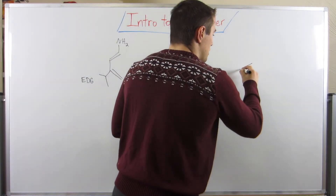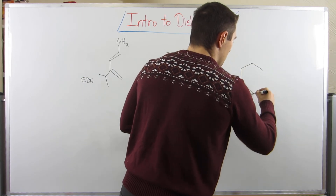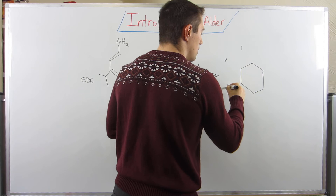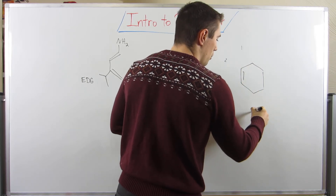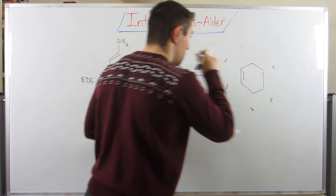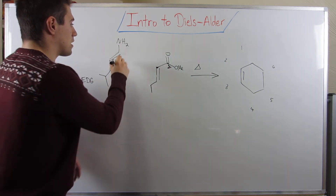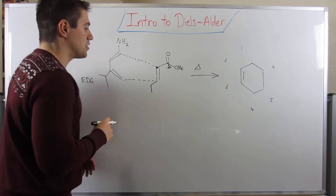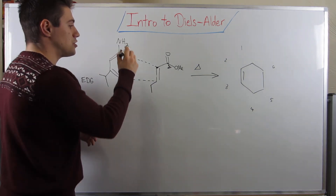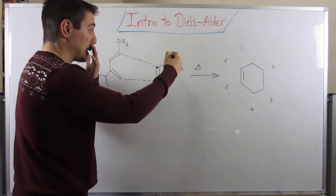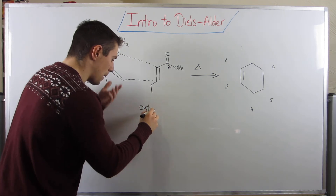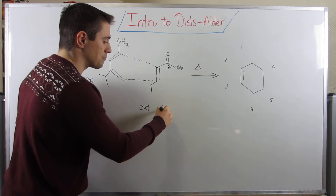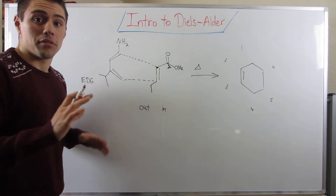We always make our six-membered ring with a double bond between positions two and three: one, two, three - double bond - four, five, and six. Let's make our little pocket. It's safe to say that the NH2 and the ester are out-groups. On the other hand, this ethyl group right here is an in-group.